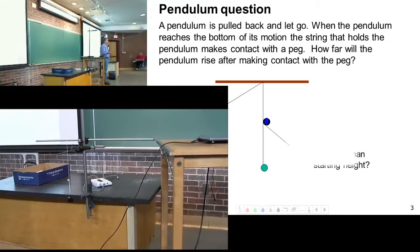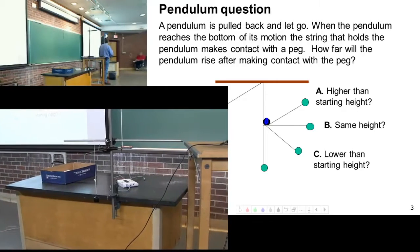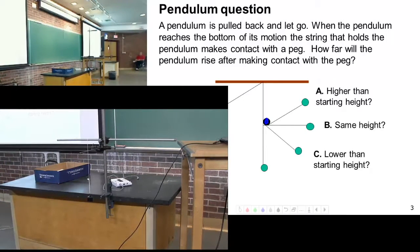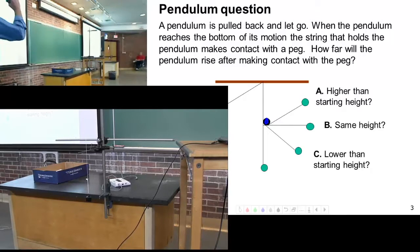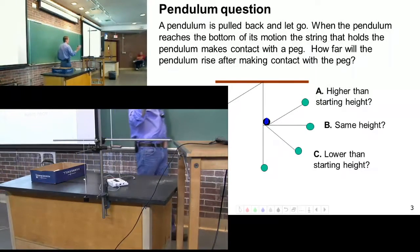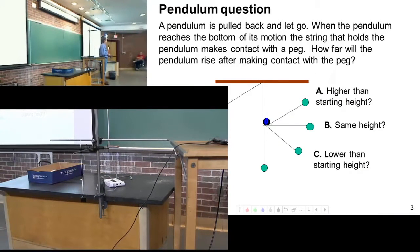Where will the pendulum end up? Will it end up lower, the same height, or higher? So pendulum comes down, hits the peg. We've changed the pendulum at that point in time. What will it do? Will it go to the same height, lower, or higher than its original height?